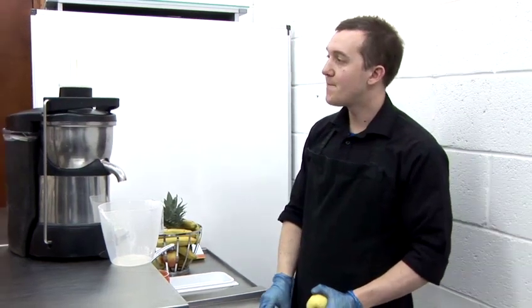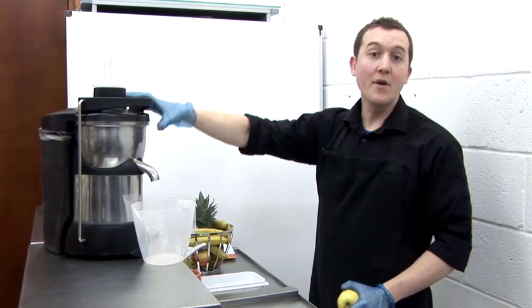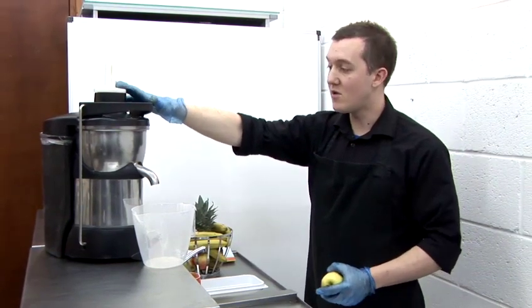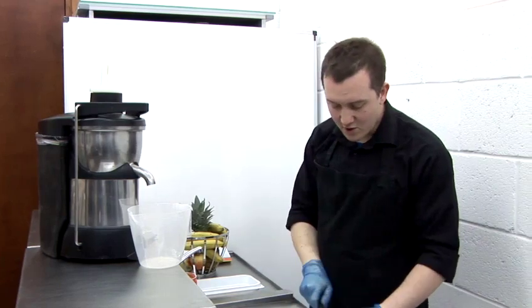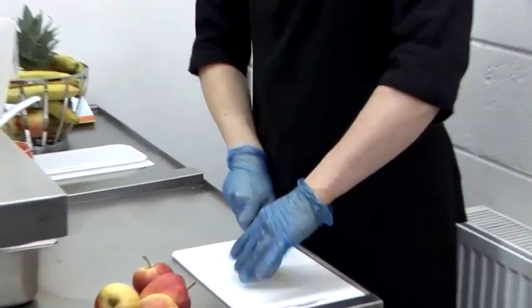Most juicers, you can put the apple in whole, depending on the size. You may have a smaller machine which you need to chop them up. So we're going to chop them up anyway, just into small pieces.